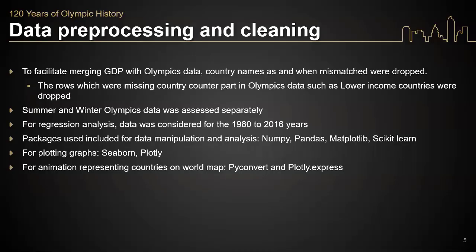Our regression analysis compared a country's GDP and how that would relate to medal winnings. As we were merging the two data sets together, we needed to look at differences and make sure duplicative data wouldn't impact our analysis. One thing we noticed were mismatches in country names between the two data sets. For example, St. Kitts had 'Saint' spelled out in the Olympic data but abbreviated as 'St.' in the GDP data. We picked one standard — in this case, the Olympic data spelling — and made the GDP data set match.